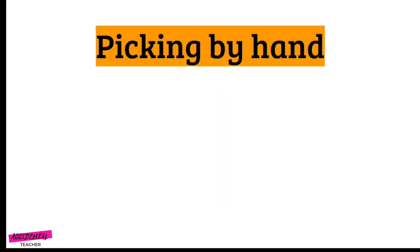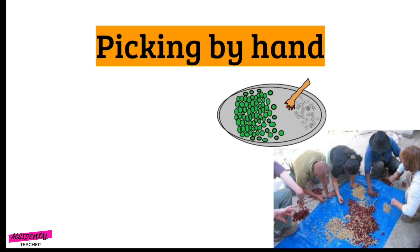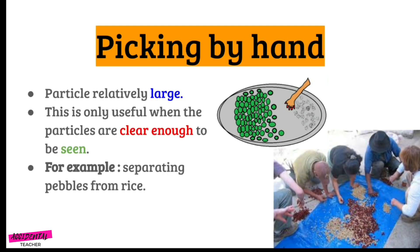The first method is picking by hand. Look at the picture — what are those people doing? They are separating two different objects. This method is called the picking by hand method. It can be used if the particles are relatively large and only useful when the particles are clear enough to be seen. For example, separating pebbles from rice.